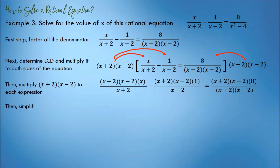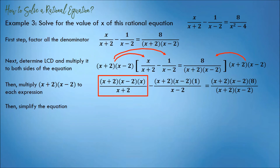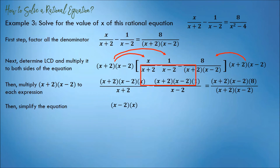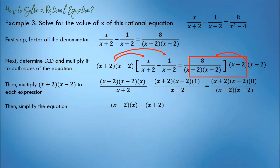Then, simplify the equation. On the first part, the answer is (x minus 2) times x, because (x plus 2) will be divided. On the second part, the answer is negative (x plus 2) times 1, because (x minus 2) will be divided. And on the third part, the answer is 8, because (x plus 2) and (x minus 2) will both be divided.